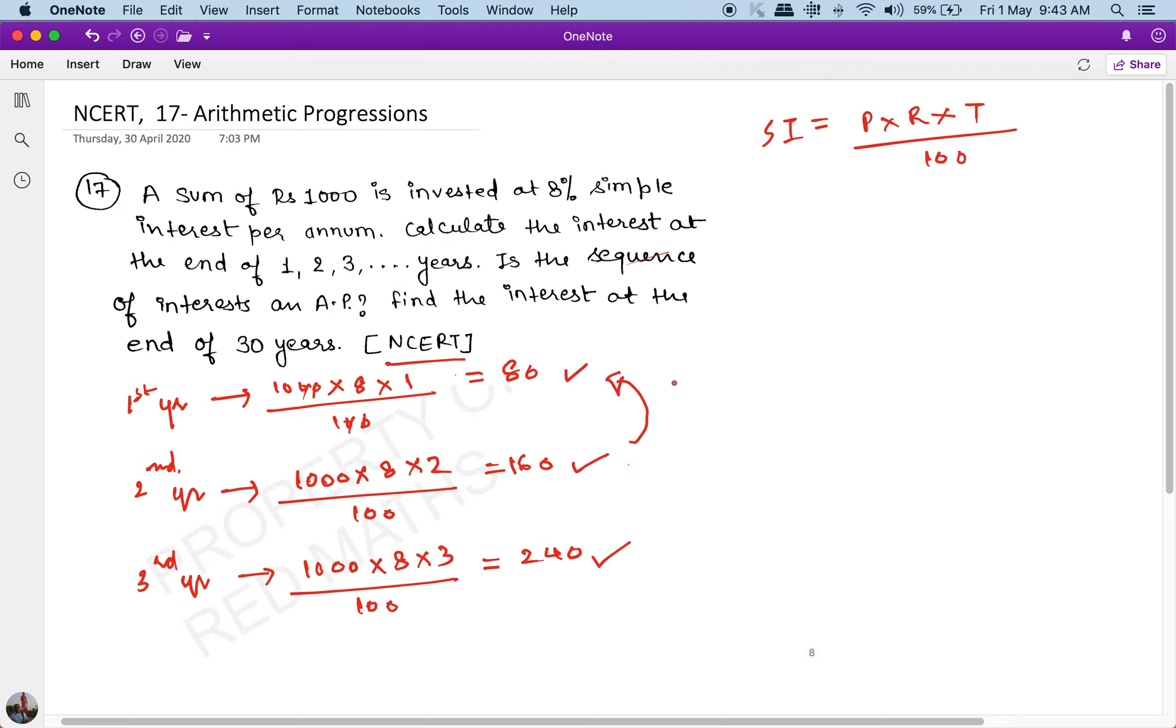Okay, so the difference, the common difference is 80 here, and the common difference is again 80 here. If you want to find the interest at the end of 30 years, the simple interest in the 30th year is going to be...